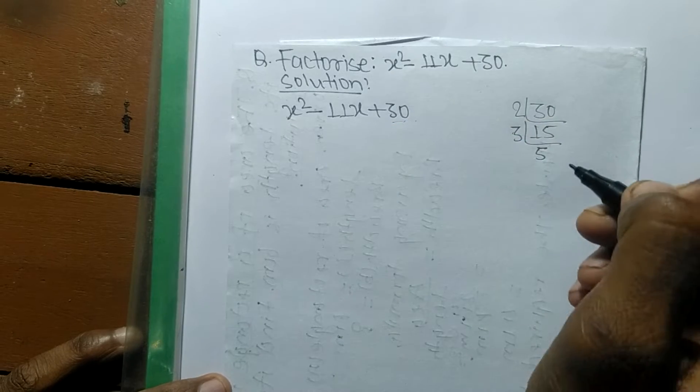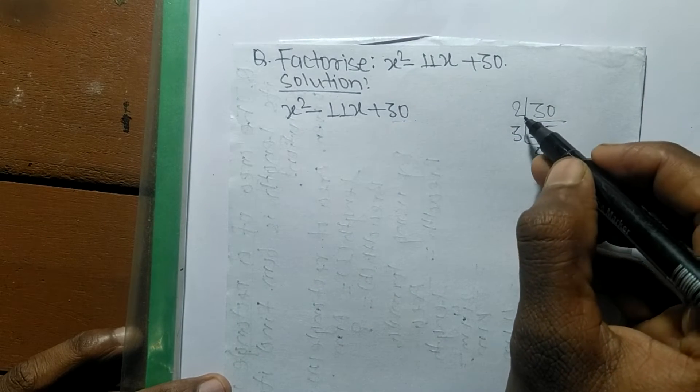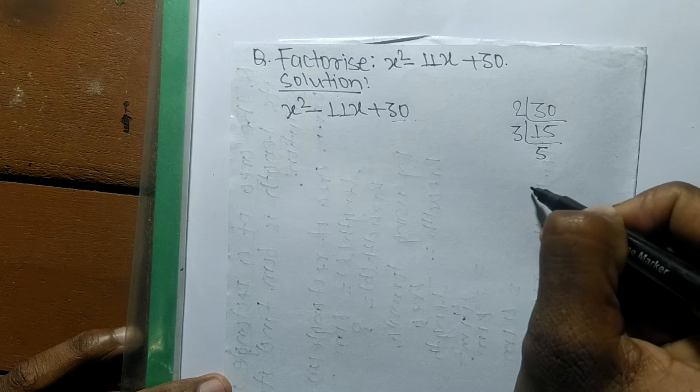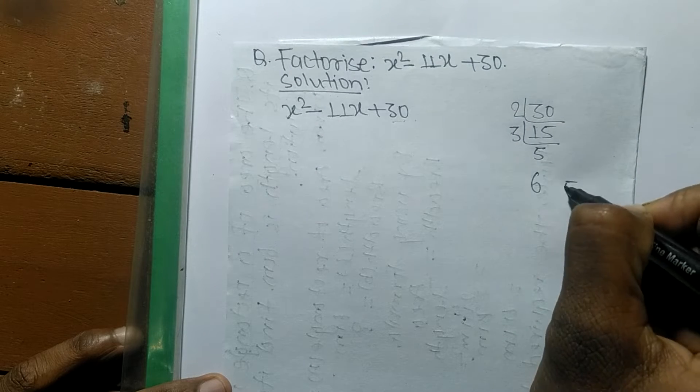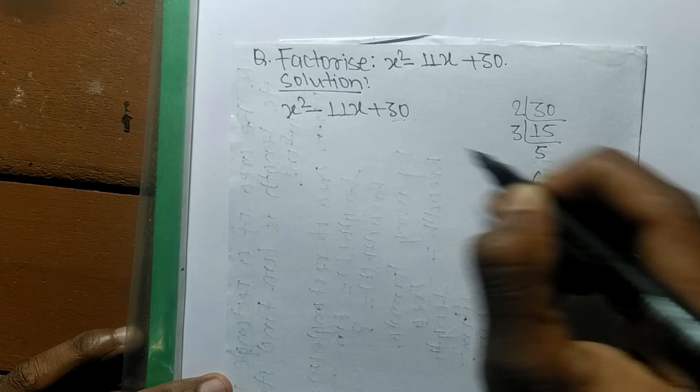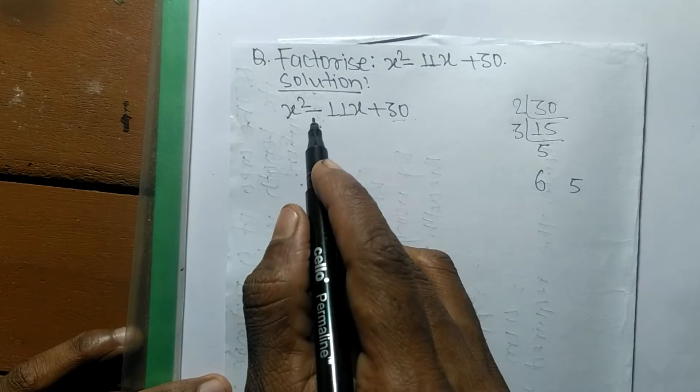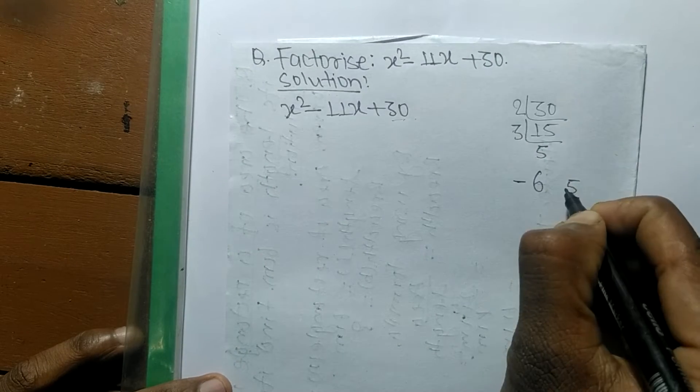Let's multiply the first two numbers: 2 times 3 equals 6, and the remaining is 5. So 6 plus 5 equals 11, but the sign here is minus, so it's minus 6 and minus 5, which equals minus 11.